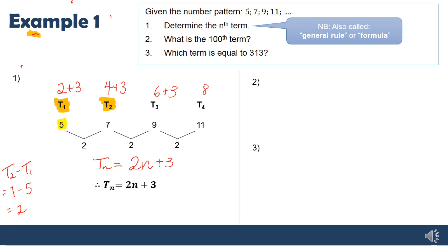Once we have the pattern, we can work out anything they ask. For the 100th term, we substitute: 2 times 100 plus 3 gives 203. When they ask which term equals a certain number, like 313, we work backwards: substitute 313 for the term, subtract 3 from both sides, and divide by 2 to get the 155th term.